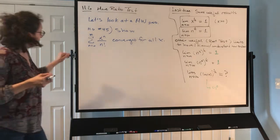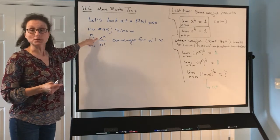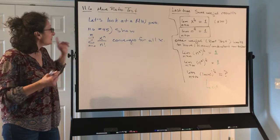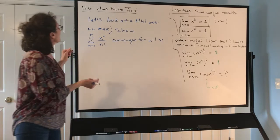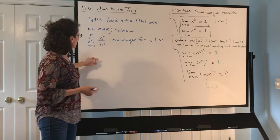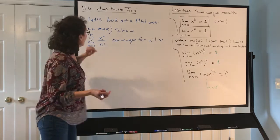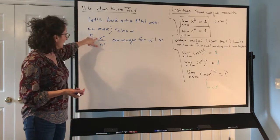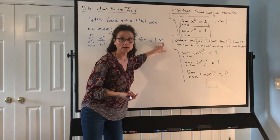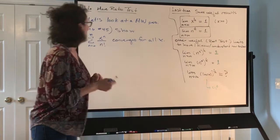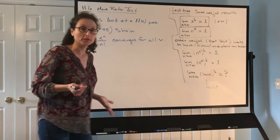Remember, I was promising you our series are going to start having variables in them instead of just numbers. In the last homework problem we looked at the sum of n factorial over 100 to the n. This is kind of the reverse of that — where x would have been 100 in the other one. Now x stands for any real number, and that doesn't say x positive. X could be negative as well.